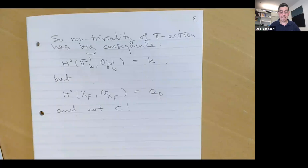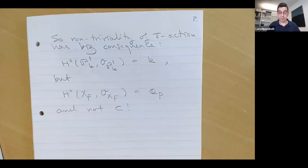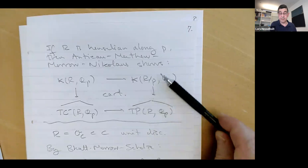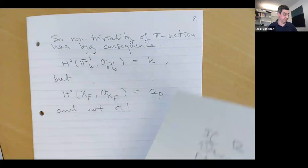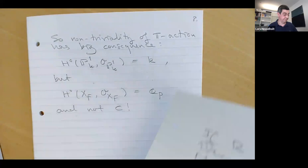An audience member asks about the appearance of Q_p: is it due to universal perfection and Witt vectors, giving a deformation rather than the base structure? The speaker replies that it is actually because of the delicacy of this particular map, and that C does not disappear — it goes somewhere else.